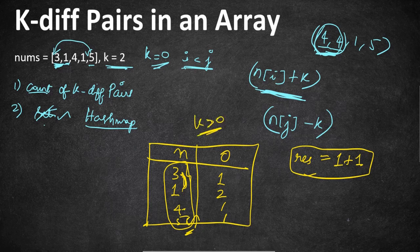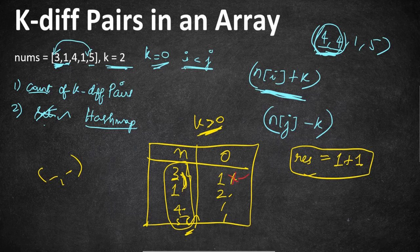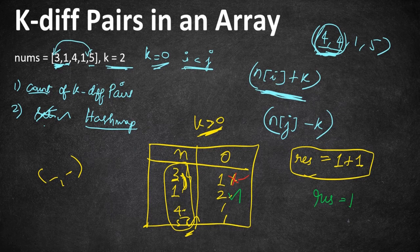If k equals 0, we can only form pairs where both numbers are equal, like (4, 4). So instead of checking element + k, we check whether the element's count in the hashmap is greater than 1. In our example: 3's count is 1 — no pair. 1's count is 2 — yes, result becomes 1. 4's count is 1 — no pair. 5's count is 1 — no pair. So the result is 1 for k = 0.